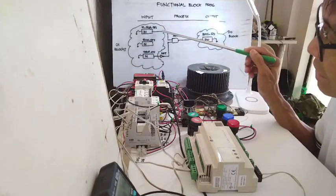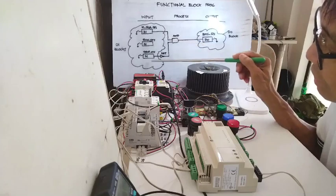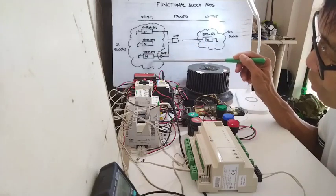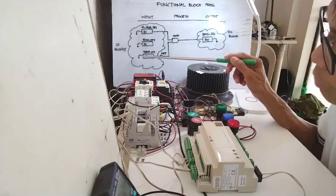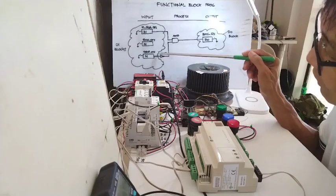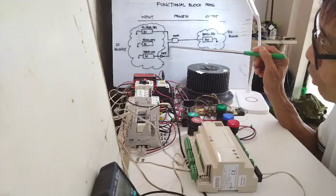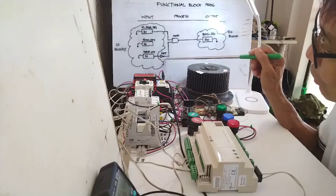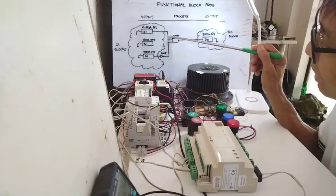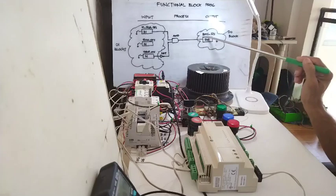It should be in auto and there's no trip — so the trip signal is 0. Because if it trips, it becomes 1; so when there's no trip, it is 0. That 0 is fed to the NOT gate and inverted to 1, giving input B of the AND gate a value of 1. So I have 1 and 1 at the AND gate inputs, and the output will be 1, which then goes to the DO block.